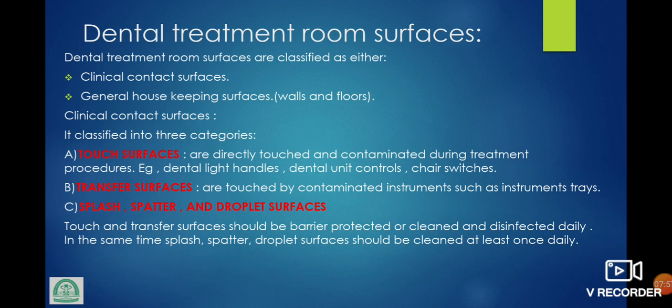Dental treatment room surfaces can be classified into two: clinical contact surfaces and general housekeeping surfaces such as walls and floors. Clinical contact surfaces are classified into touch surfaces, transfer surfaces, and splash/spatter/droplet surfaces. Touch surfaces are directly touched and contaminated during treatment — examples: dental light handle, dental unit controls, chair switches. Transfer surfaces are touched by contaminated instruments, such as instrument trays. Touch and transfer surfaces should be barrier-protected or cleaned and disinfected daily. Splash, spatter, and droplet surfaces should be cleaned at least once daily.